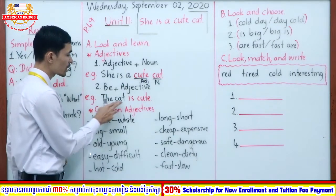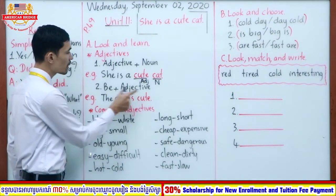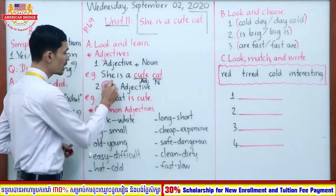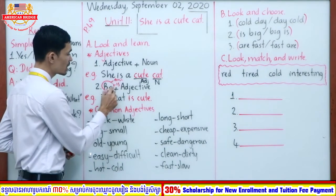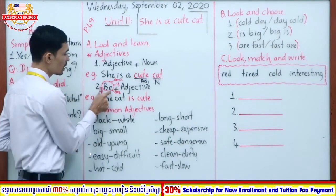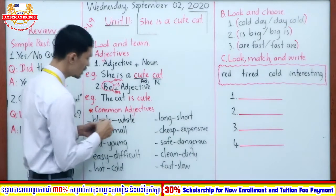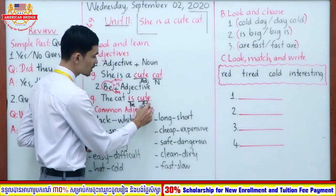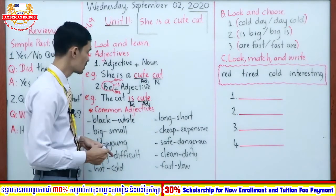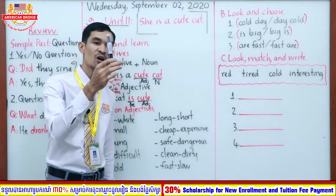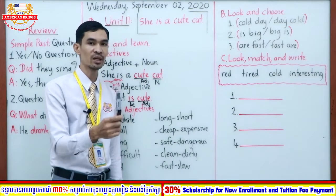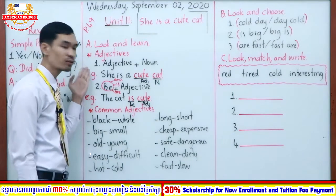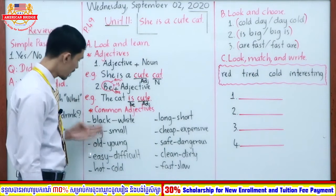Look at one more example — the second form is 'be' plus adjective. 'Be' can be 'am,' 'is,' or 'are.' Look at the example: 'The cat is cute.' 'Is' is the be verb and 'cute' is the adjective, so the form is be plus adjective. Another example: 'This marker is black' — 'is' is the be verb and 'black' is the adjective. So in this lesson we have two forms: adjective plus noun, and be plus adjective.